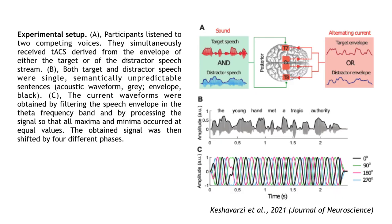To investigate the functional role of cortical tracking of background speech, we employed a simplified version of a cocktail party with two voices, a male and a female one. Eighteen participants were instructed to listen to a target voice and to ignore the distractor one while their auditory cortices were stimulated with alternating current. The current waveforms were derived from the theta-frequency portion of the speech envelope of either the target or distractor voice.